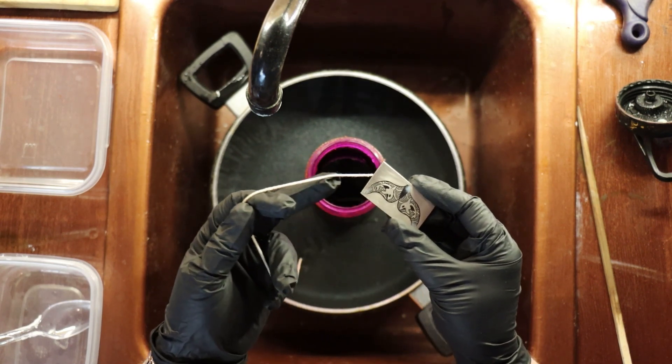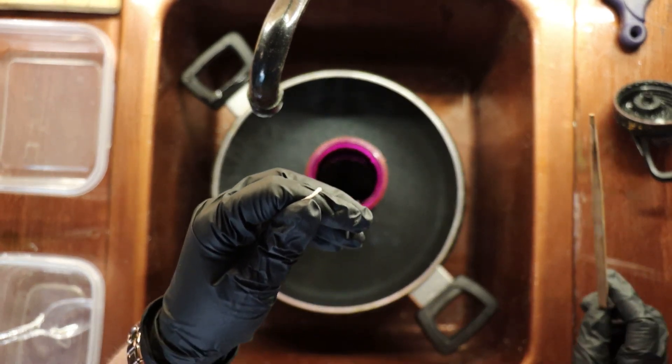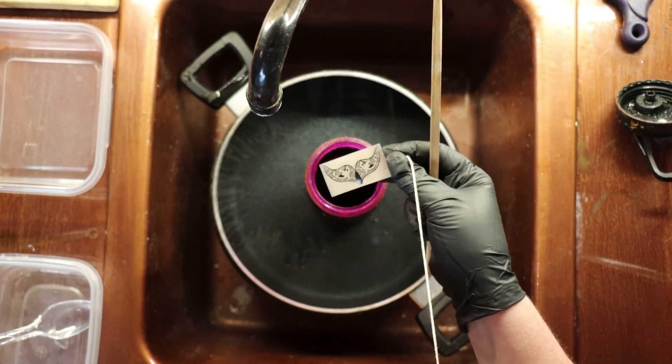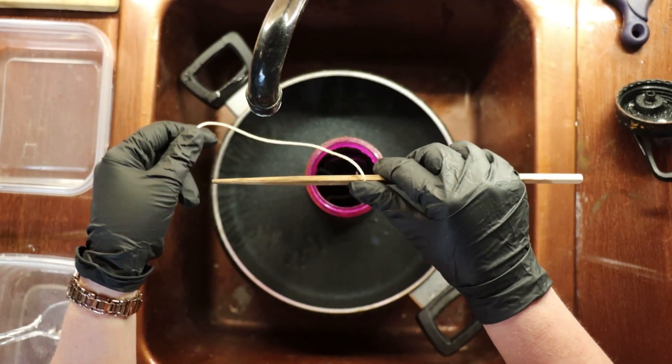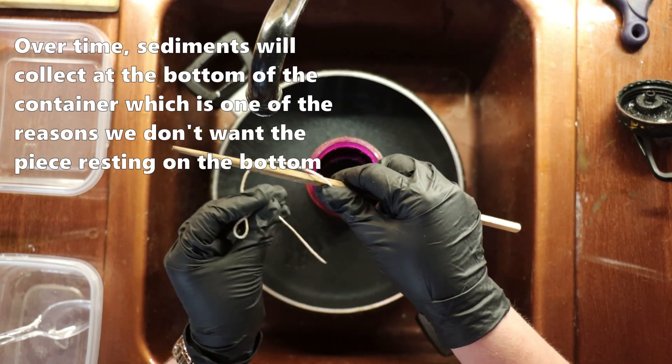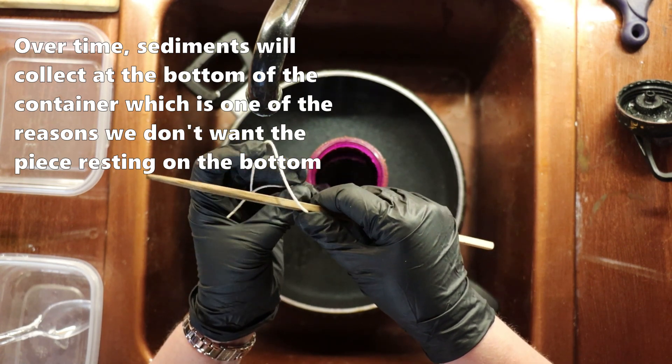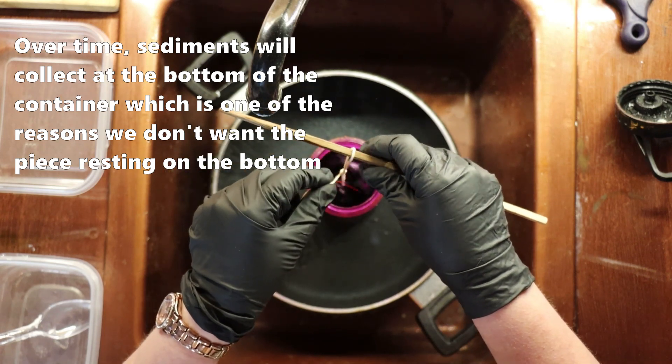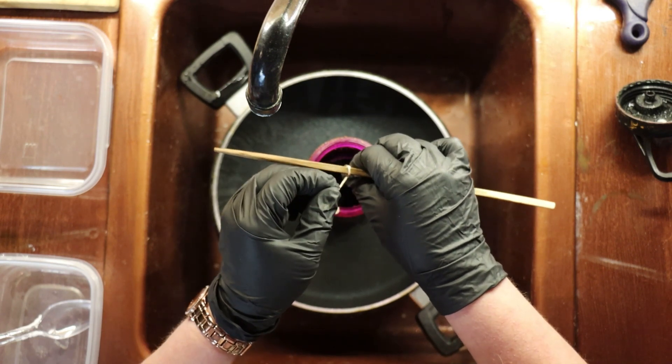This is the piece that we applied the resist to in the previous video. We just want to suspend the piece into the ferric nitrate solution, and we can do that using the chopstick. We don't want the piece to touch the bottom of the container, and we want to make sure that it is below the surface of the solution. So we just tie the string around the chopstick and secure it where it will be suspended in the middle of the solution.